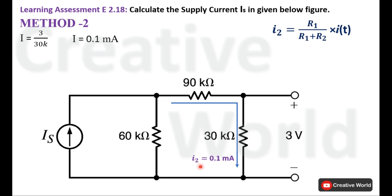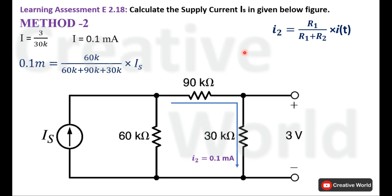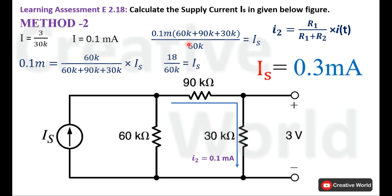We can now use the current divider rule to calculate Is. In the formula, I2 is known. R1 is the 60 kΩ resistor, and R2 equals the sum of 90 kΩ and 30 kΩ. The total current I_T in our case is Is, which is what we need to find. Substituting: I2 = 0.1 mA, R1 = 60 kΩ, R1 + R2 = 60 kΩ + 120 kΩ. Rearranging to isolate Is gives a value of 0.3 milliampere.